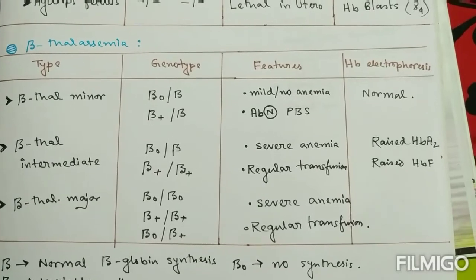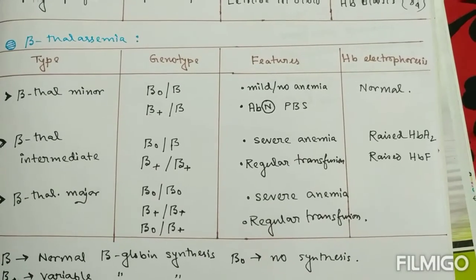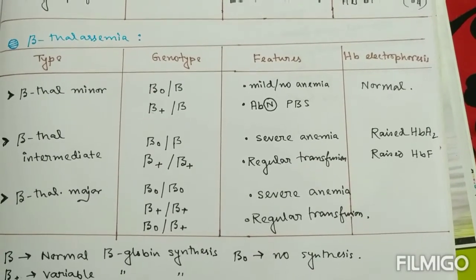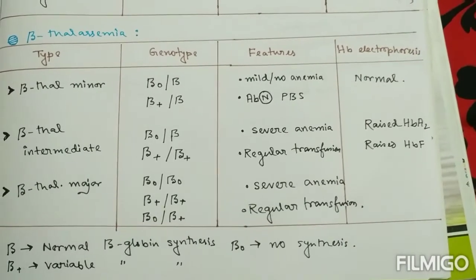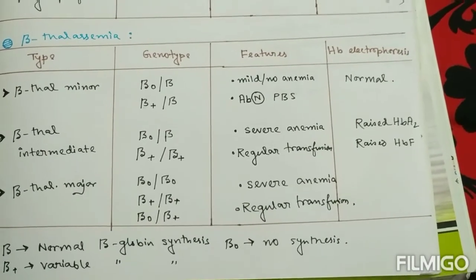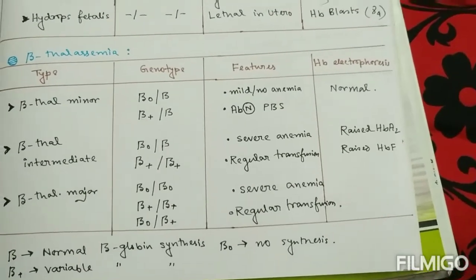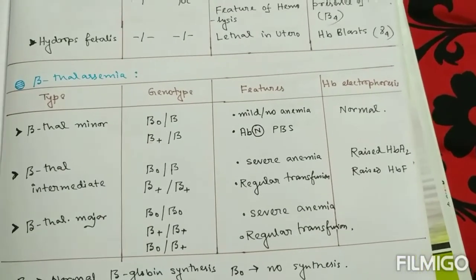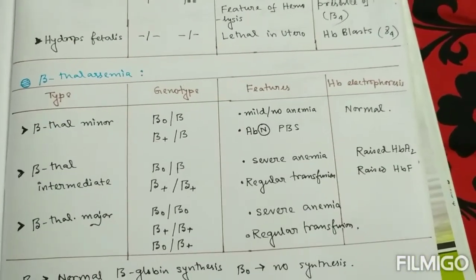In beta thalassemia major, the genotype is beta-zero/beta-zero, beta-plus/beta-plus, or beta-zero/beta-plus. Features are severe anemia and regular transfusion is required. This concludes the basics of thalassemia — thank you.